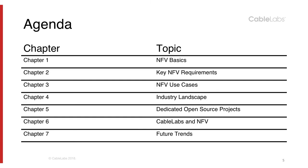In the next three to three and a half hours, we'll go through a variety of topics organized in seven chapters. In chapter one, we'll look at NFV basics, followed by key NFV requirements. Chapter three, we will look at NFV use cases. Next, industry landscape. Then we'll look at a subset of open source NFV projects. Chapter six, we'll look at what CableLabs is doing in the area of NFV. And we'll finish by looking at some future trends.